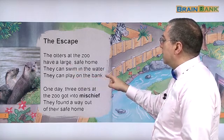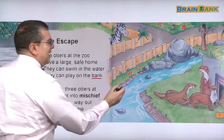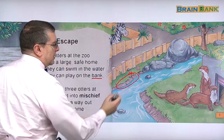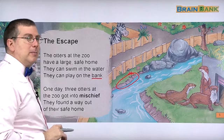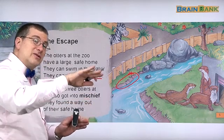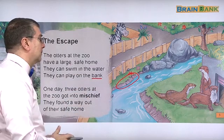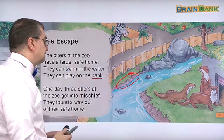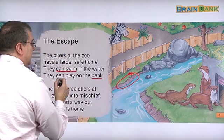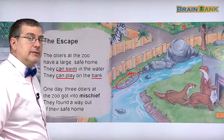They can play on the bank. On the bank — not that kind of bank. This is also called a bank in English. The bank is next to the river and they can play on the bank. A bank is some earth or dirt that's next to the river or usually a river or a stream. A stream is smaller; a river is bigger. So the otters can swim and play on the bank.